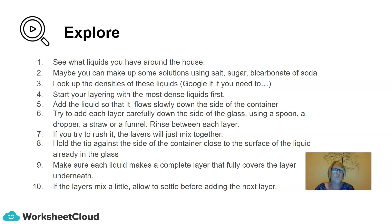Step seven: you need to learn to be patient and have some self-control — don't rush this experiment. Take it slowly, put each layer together slowly, and don't be in a rush because you don't want the layers to mix together. You're going to hold the tip of your straw or funnel against the side of the container, as close to the surface of the liquid already in the glass as possible, but it must not touch. Make sure each liquid makes a complete layer that fully covers the previous layer. If the layers do start to mix, just wait and be patient — let the layers settle before you add the next layer.